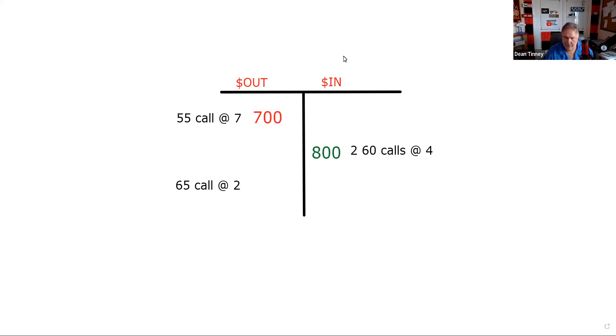A butterfly is a three-part strategy. A long butterfly is when we have a lower strike call that we buy, we sell two of the middle strike calls, and then we buy a higher strike call. And then we bought that 65 call for 2. So that's my initial setup: I'm out $900 and I brought in $800.